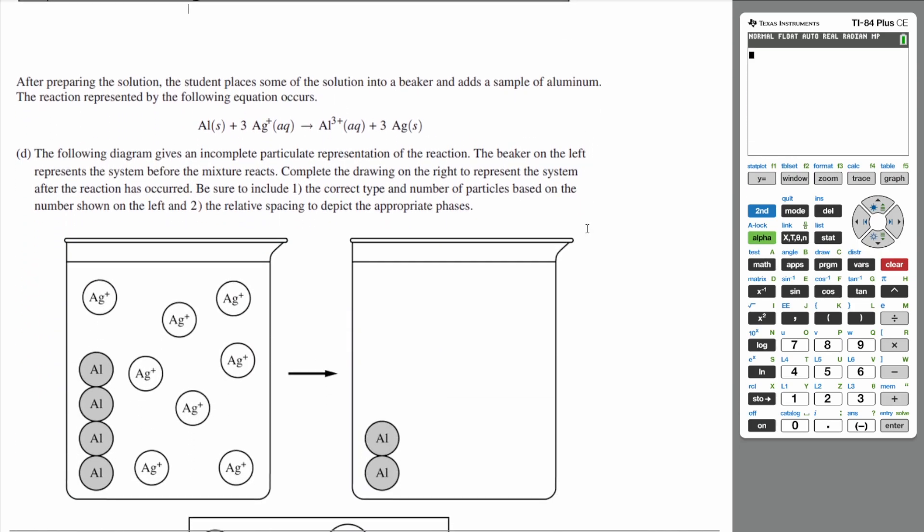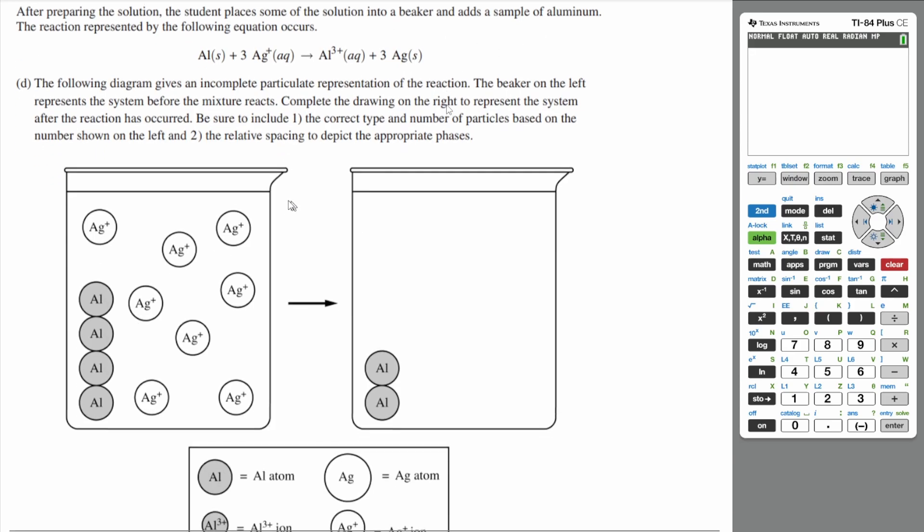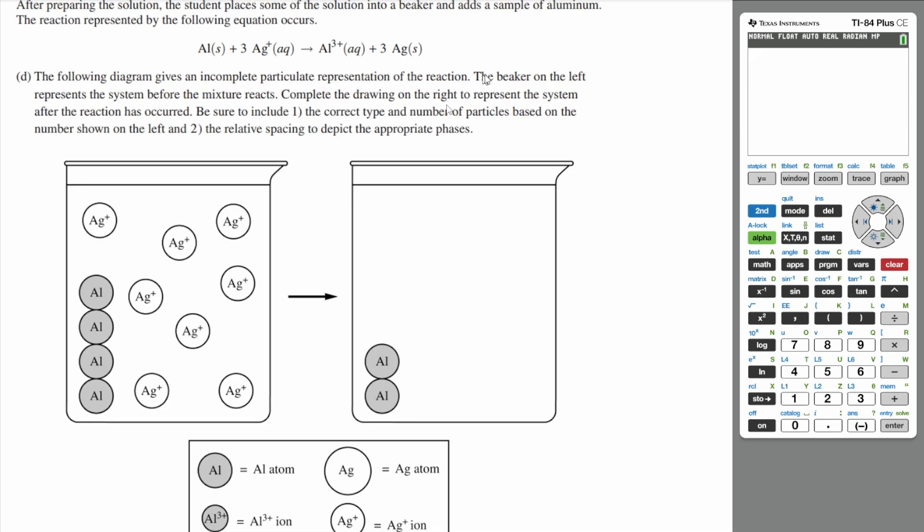All right, and that's it. So you would place the measured silver nitrate into the volumetric flask, fill up the volumetric flask up to the 200 mL mark with water, and then mix thoroughly. Let's go on to D. After preparing the solution, the student places some of the solution into a beaker and adds a sample of aluminum. The reaction represented by the following equation occurs. So you have aluminum solid plus three silver ions producing aluminum 3+ and three silver solid. The following diagram gives an incomplete particulate representation of the reaction. The beaker on the left represents the system before the mixture reacts. Complete the drawing on the right to represent the system after the reaction has occurred. Be sure to include the correct type and number of particles based on the number shown on the left and relative spacing to depict the appropriate phases.